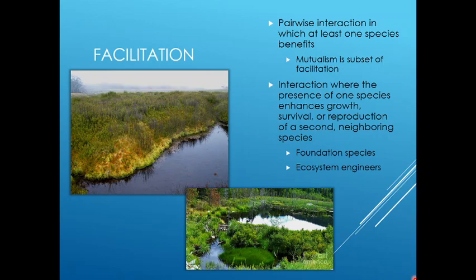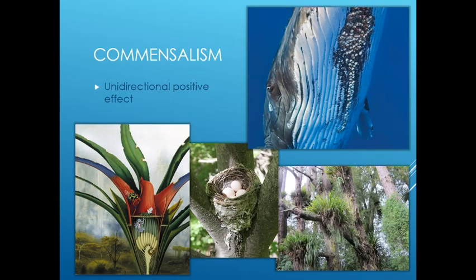Foundation species and ecosystem engineers are great examples of facilitators. Commensalism is another type of facilitation where you have a unidirectional positive effect — a positive effect on one species with no effect on the other. So whale barnacles: the whale doesn't care, these barnacles don't do anything harmful. The barnacles get a place to live and get carried around everywhere they need to go.